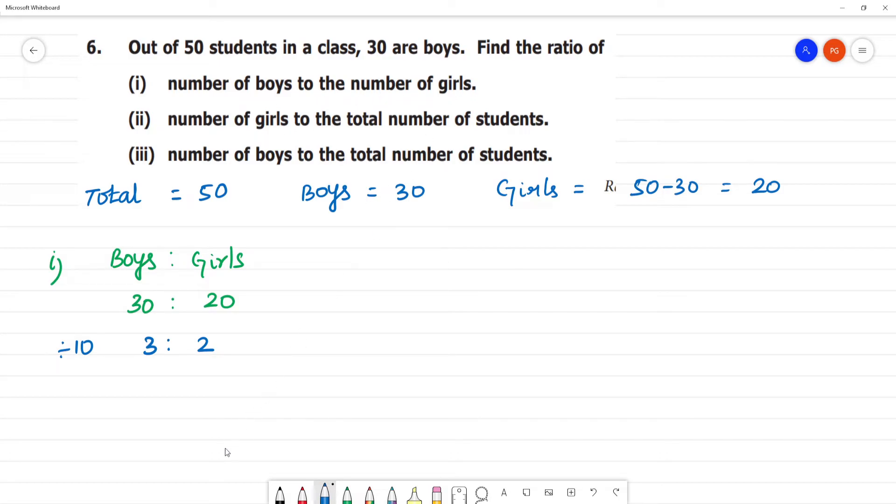Number of boys to the number of girls. Next is the second one. What are we going to say? Number of girls to the total number of students. So this is girls to total. Now, girls, what are we going to say?